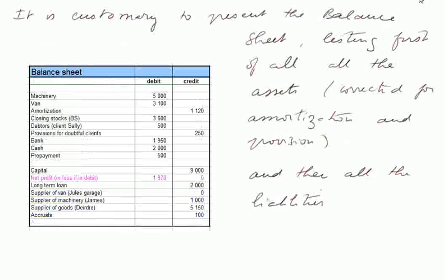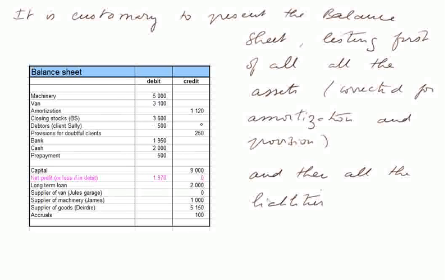It is customary to present the balance sheet listing first all the assets — that is what the firm owns — and then all the liabilities. Here we have the machinery and the van corrected for the value they lost during the accounting period, called amortization. We have the closing stocks, things that the firm owns. We have debtor, and money at the bank and cash, and the prepayment.